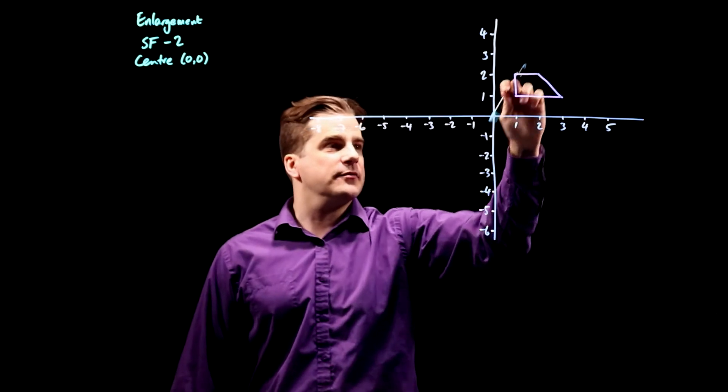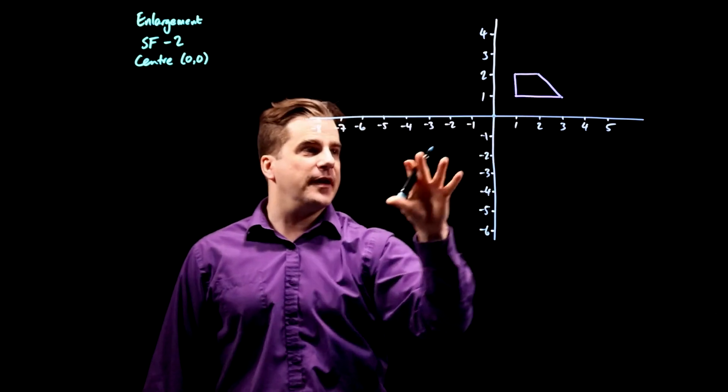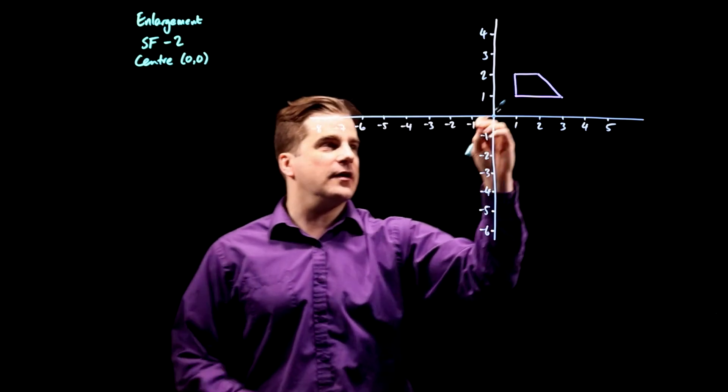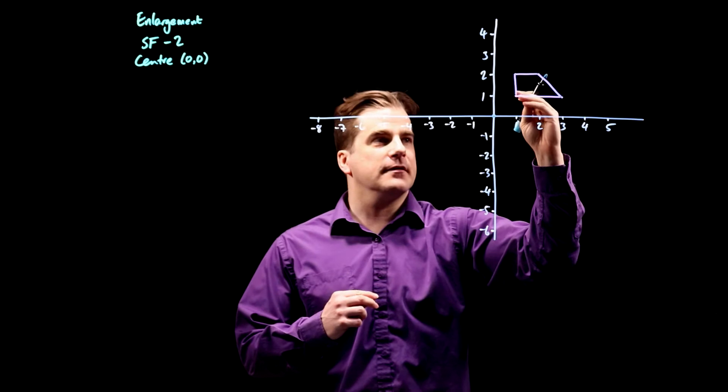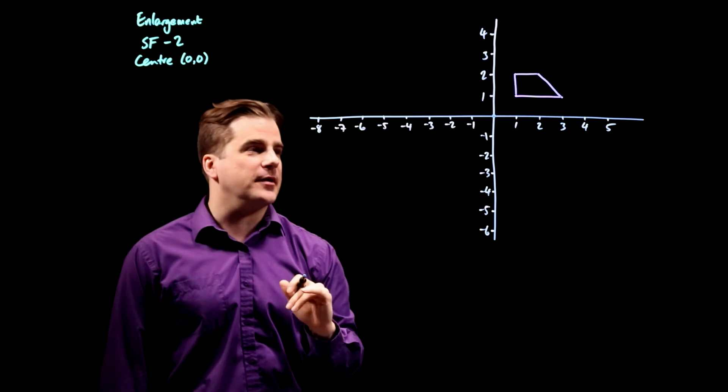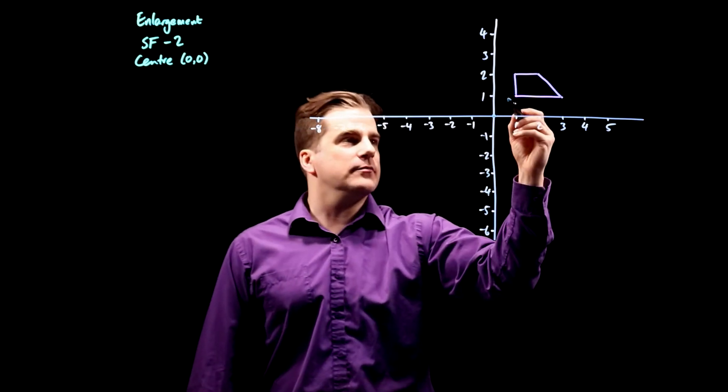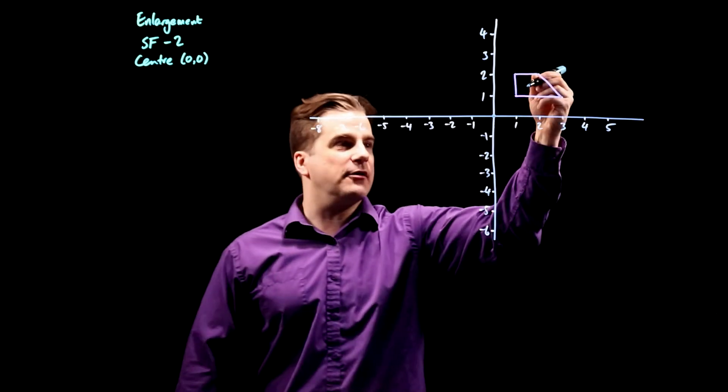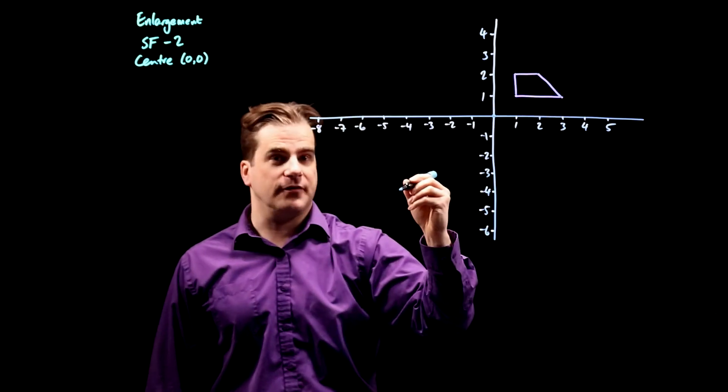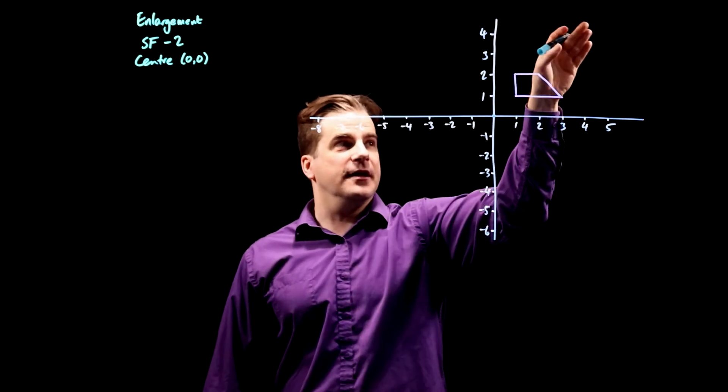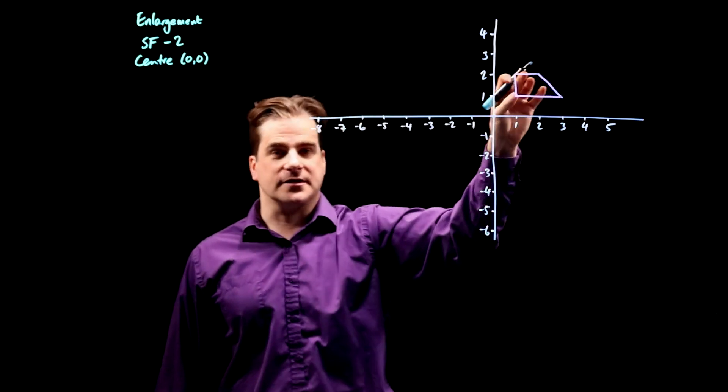So this shape through the center there will appear over here somewhere. And it also inverts the image at the same time. You'll see what I mean. So a negative scale factor means it just goes through the center of enlargement, rather than away from it in the same direction as the original shape.